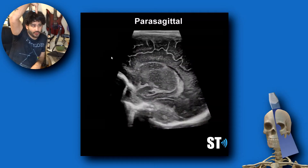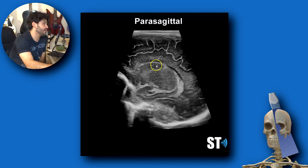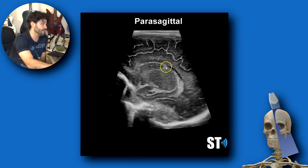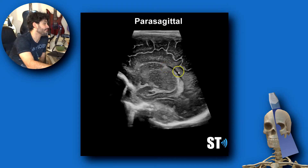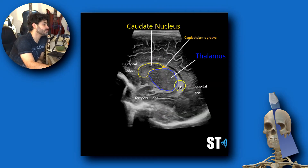From sagittal, you want to go parasagittal — I usually go to the right first, towards the patient's right. You're going to have your caudate nucleus, your thalamus, your caudothalamic groove, which is an important area because you want to make sure there are no bleeds — that's where you're going to look. Also the choroid plexus, cingulate gyrus, and you can see a bit of the temporal lobe, frontal lobe, and occipital lobe.